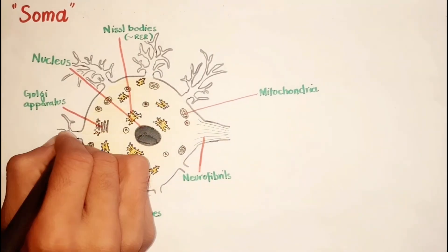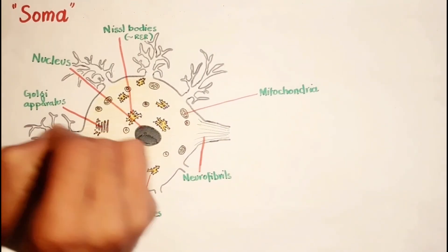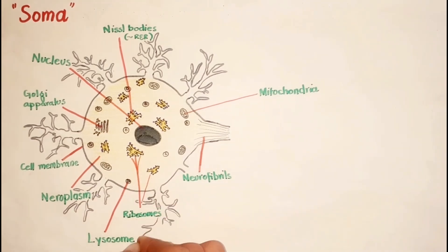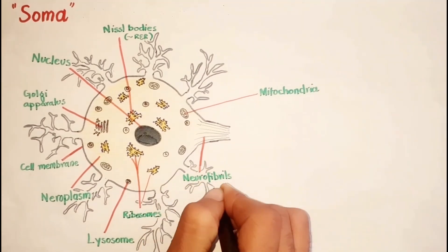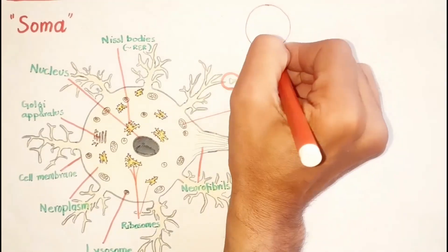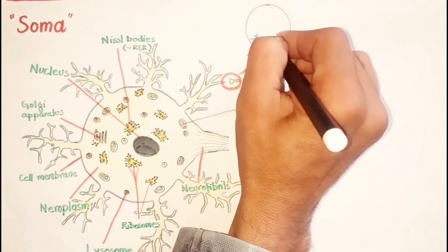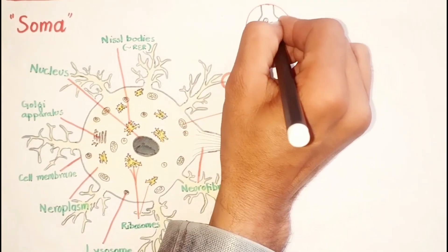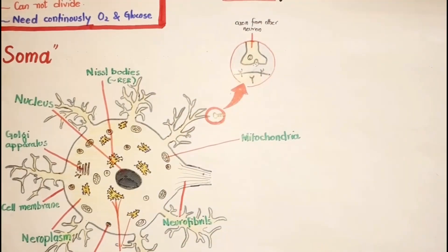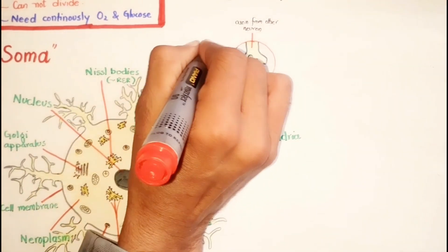Dendrites are usually short and highly branched, and together with the membrane of the cell body, dendrites are the neurons main receptive surfaces with which axons from other neurons communicate. Dendrites may be present or absent in a neuron.